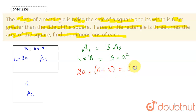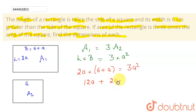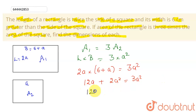So multiplying 2a by (6 + a) gives us 12a + 2a², and this equals 3a². Subtracting 2a² from both sides, we get 12a = a², which gives us a = 12.